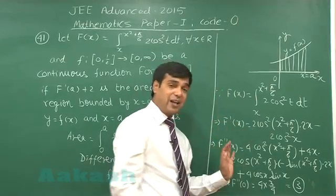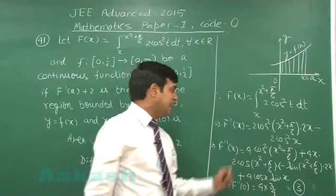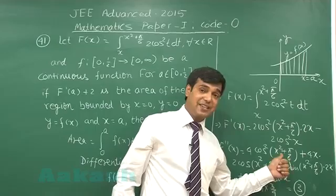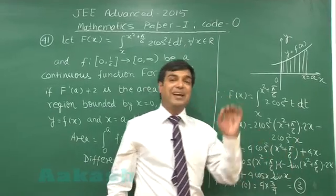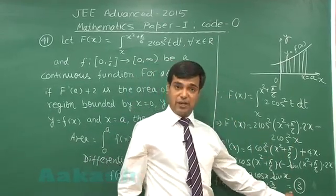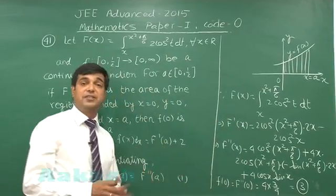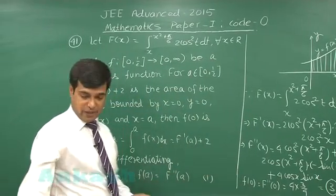So we can avoid entire calculation part while solving the paper. Simply we know on applying x as 0, rest of the terms become 0. Hence the simple result is 3. It is a good question. We get the result as 3. Let us move to the next one.